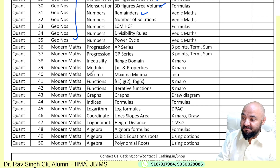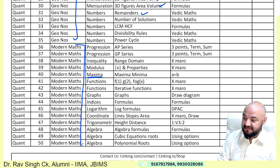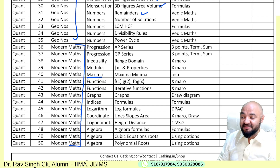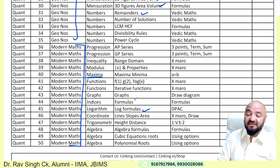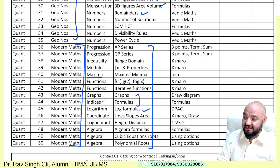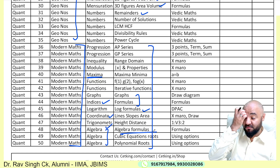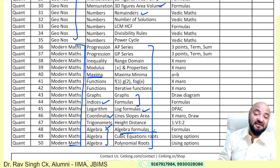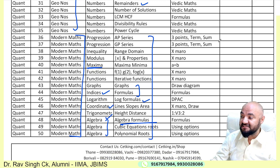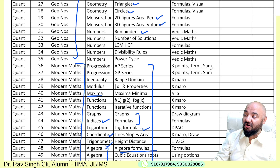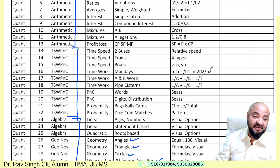Then mensuration, 2D figures and 3D figures. Last but not the least — and in fact last year there were around nine questions where the words 'maxima minima' were used in CAT — is Modern Math. There are 15 chapters within Modern Math and each of them is equally important. All these chapters include indices, trigonometry, coordinate geometry, and Algebra's cubic formulas and cubic polynomial roots.